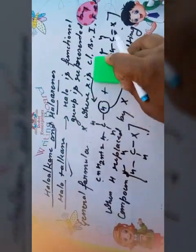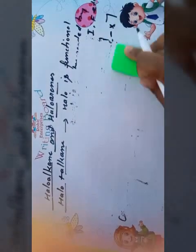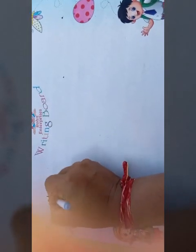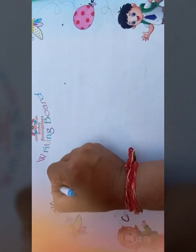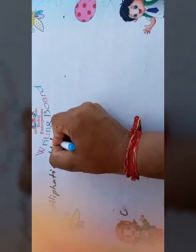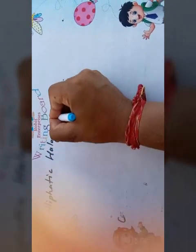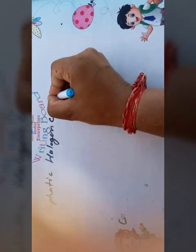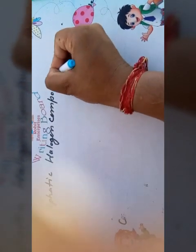We have discussed two types of haloalkanes: aliphatic and aromatic. First, aliphatic halogen compounds. Under aliphatic halogen compounds, the first type is haloalkanes.